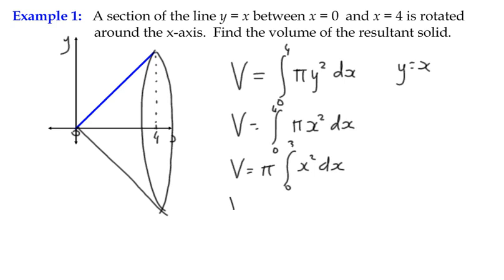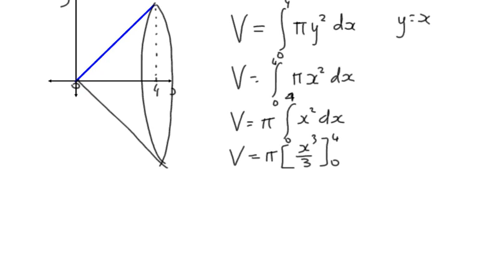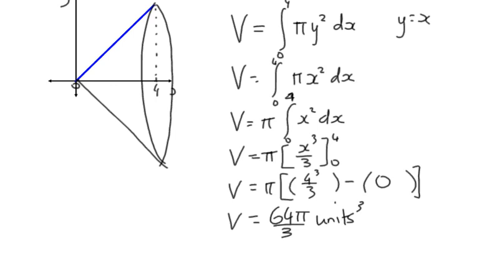We then do the integration as normal. We've got the integral of x squared as x cubed over 3. And we've got 4 times 4 times 4 is 64 over 3. That's going to be 0. And 4 cubed is 64. 64 over 3. So we've got 64 pi over 3 cubic units.